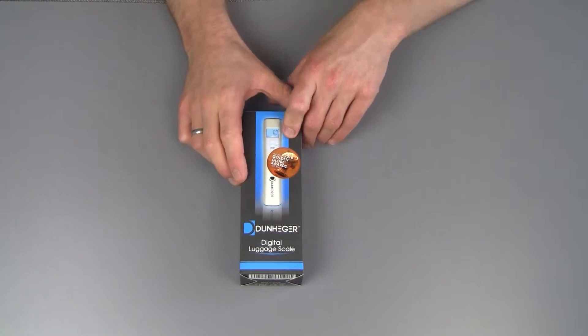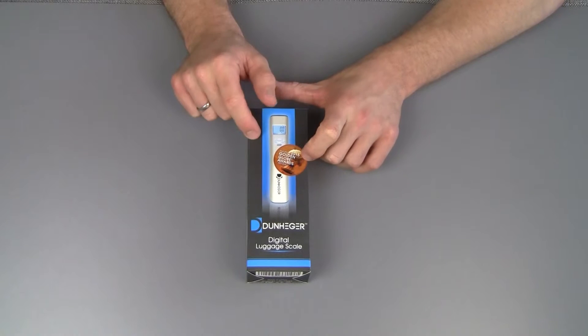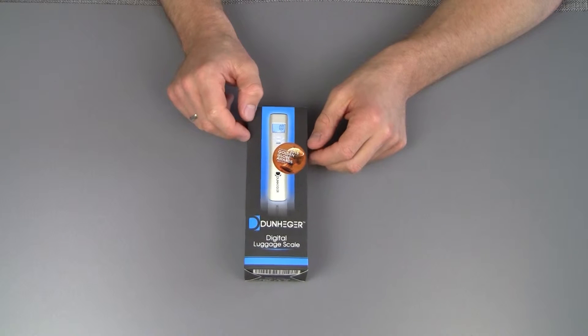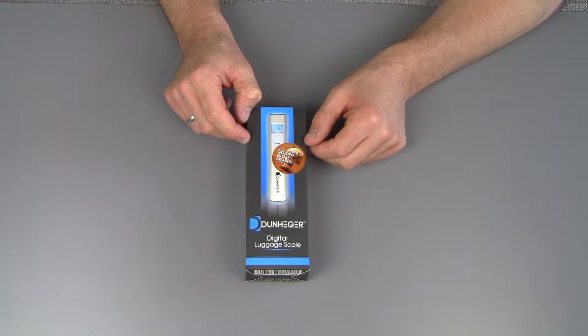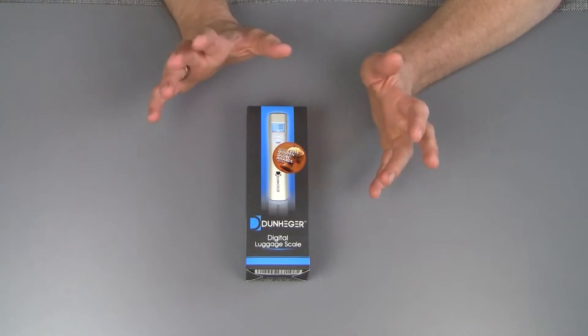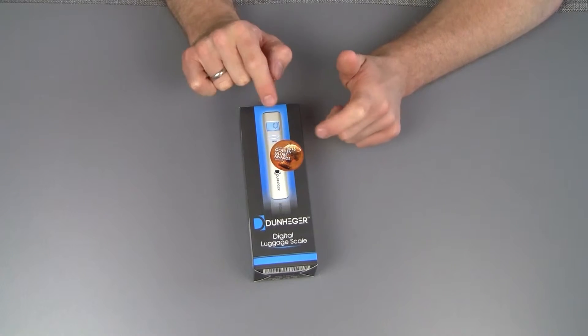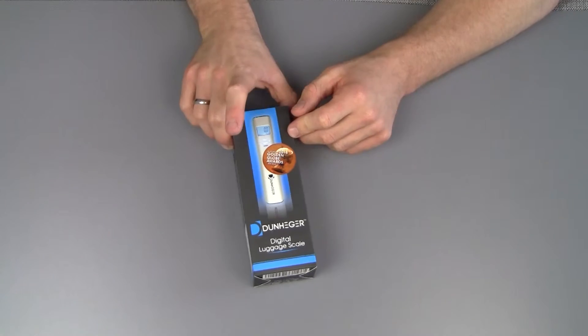Now, this is in theory a very simple product and I like very simple products. When I'm looking for a digital luggage scale I don't want an app, bluetooth, wifi connectivity and I don't want it to do my dishes and brush my teeth. I want a product that does exactly what I want it to do. And this is actually an excellent example of a product that excels in simplicity.